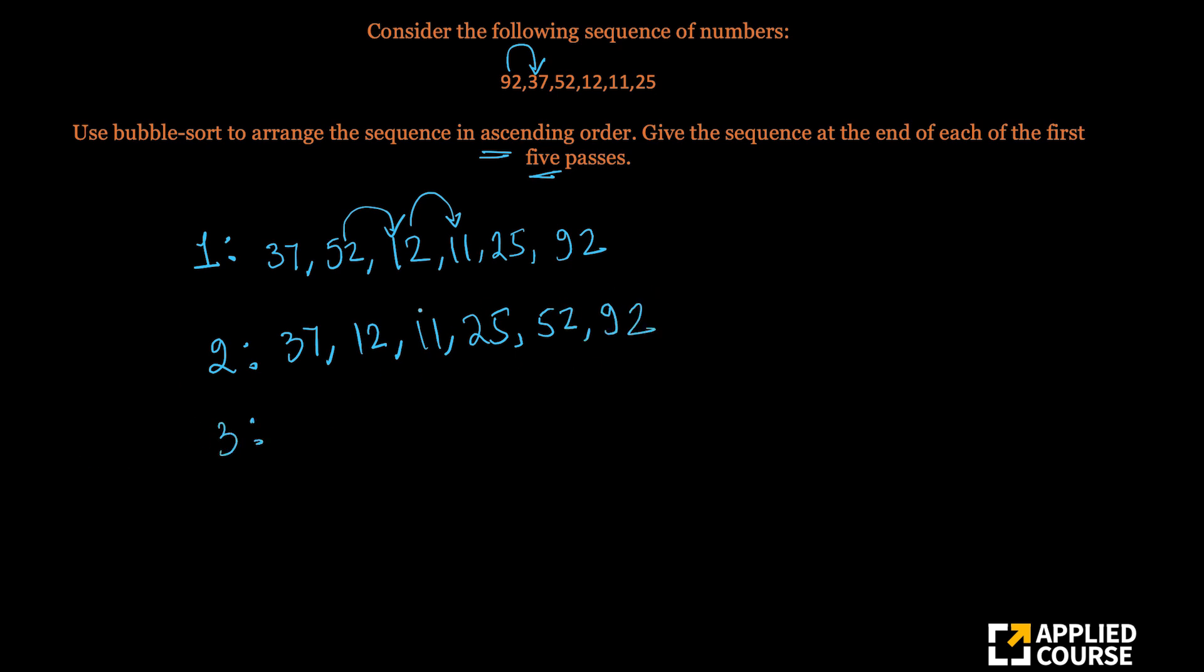At the end of third swap, again 37 would move to the right position. So you are left with 12, 11, 25, 37, 52 and 92.